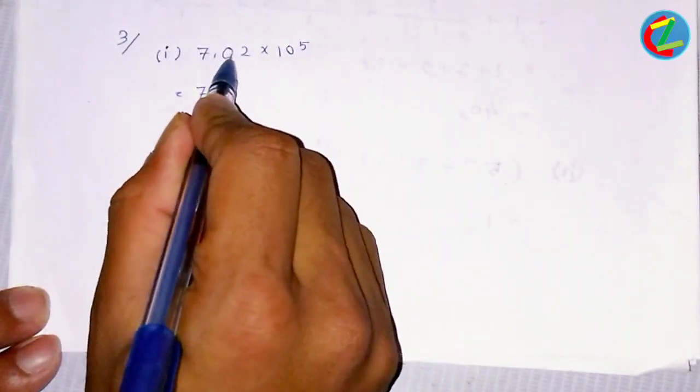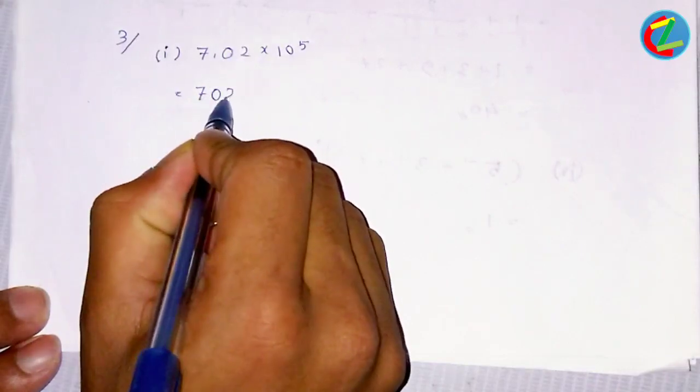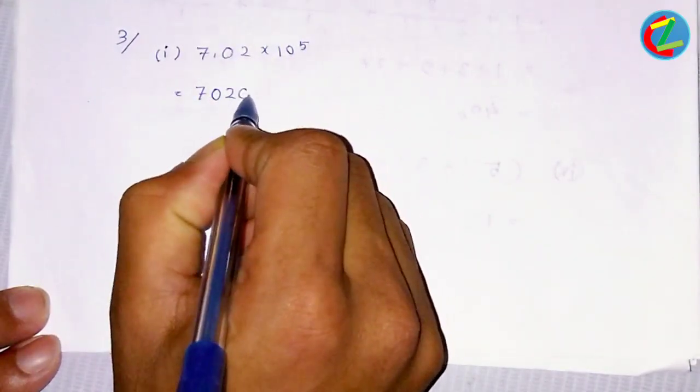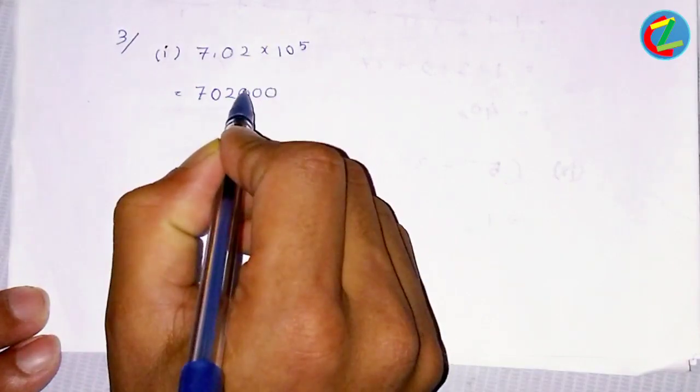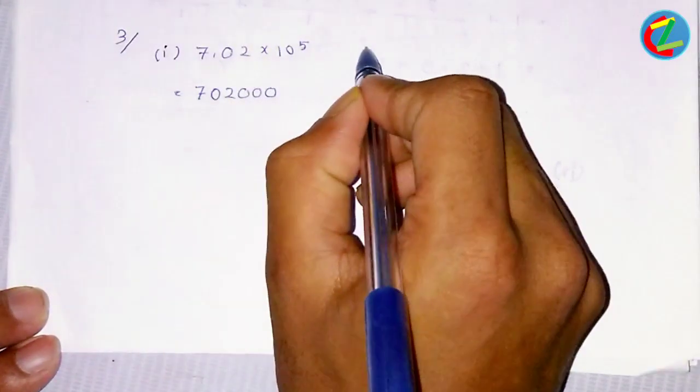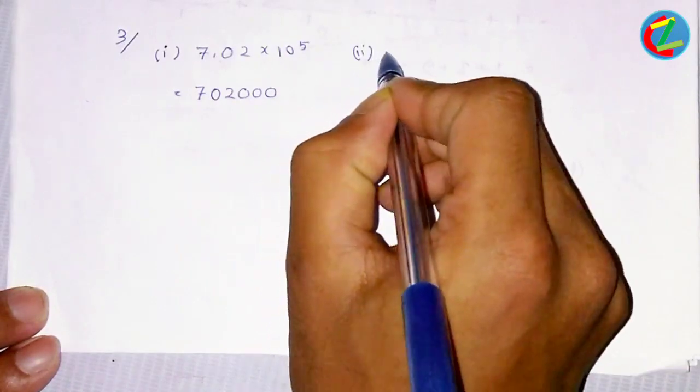We have not heard the numbers, but we have about 2.7, we have about 2.5. So this number is about 3.7.